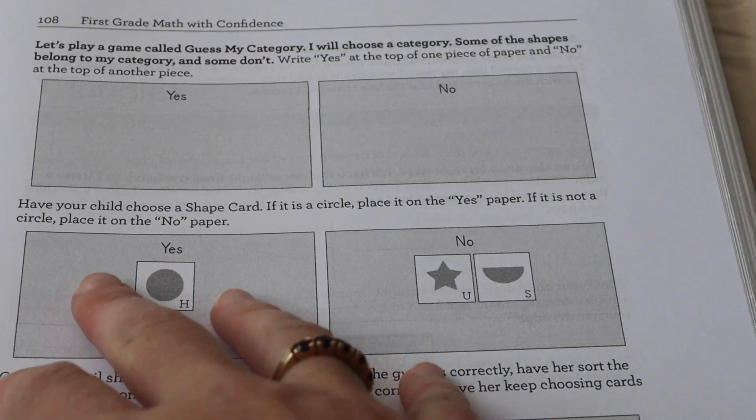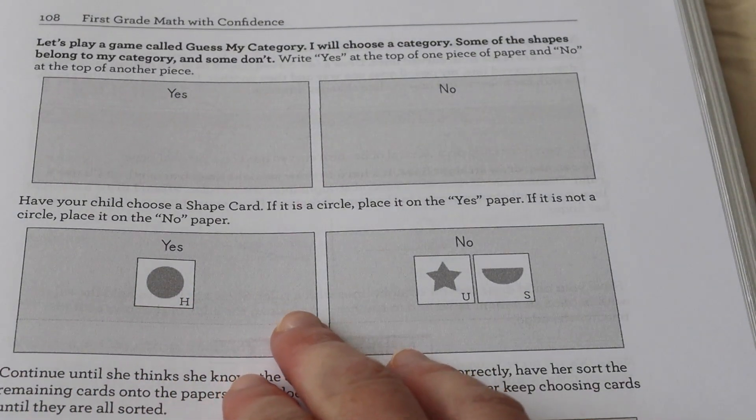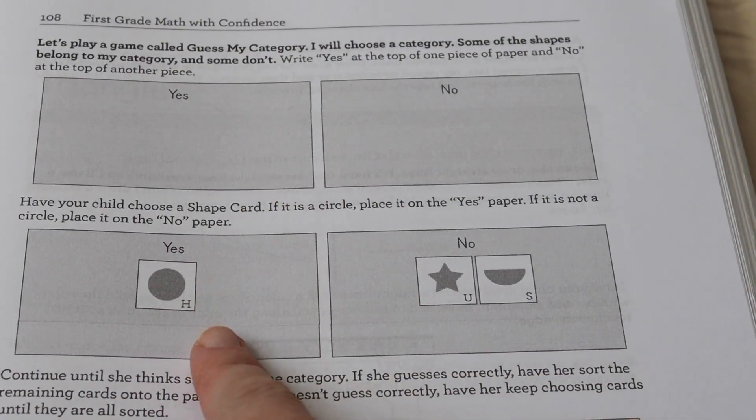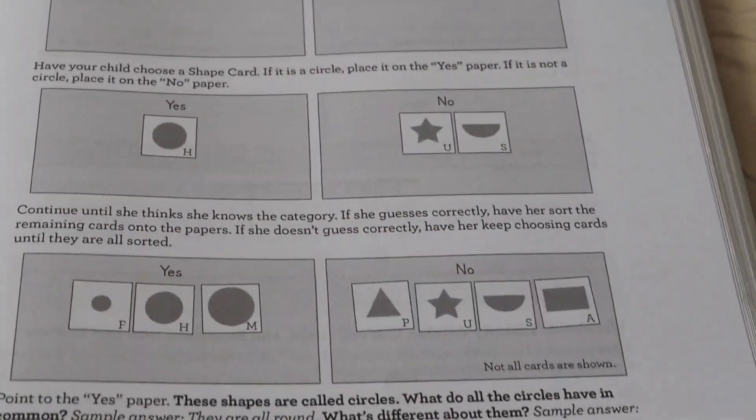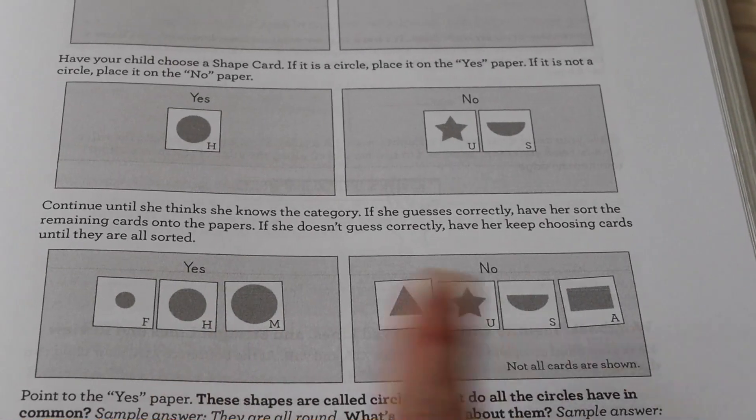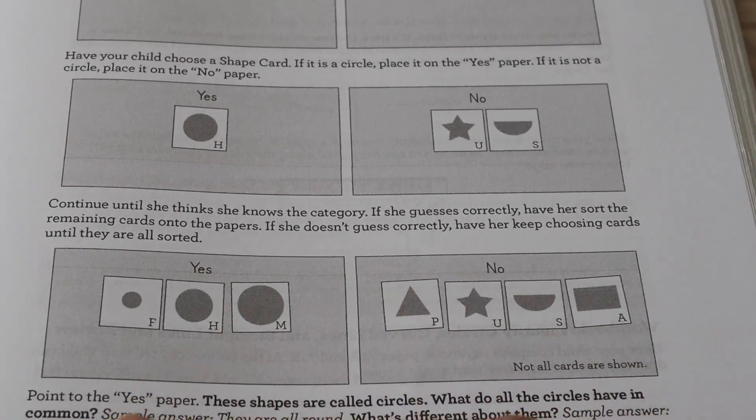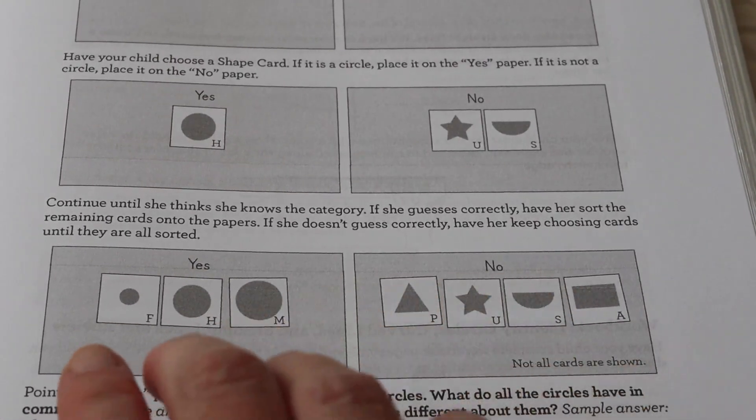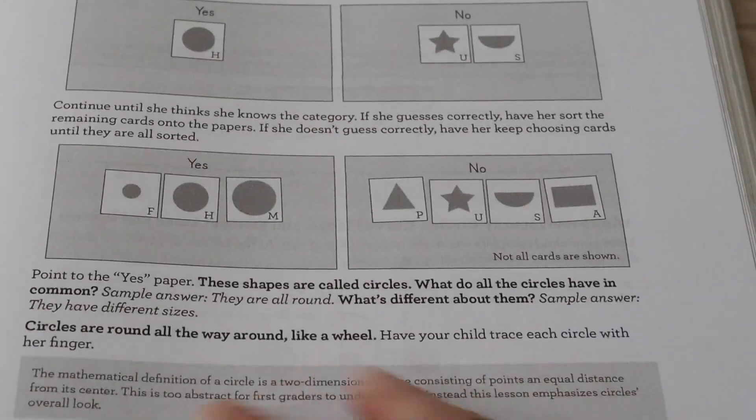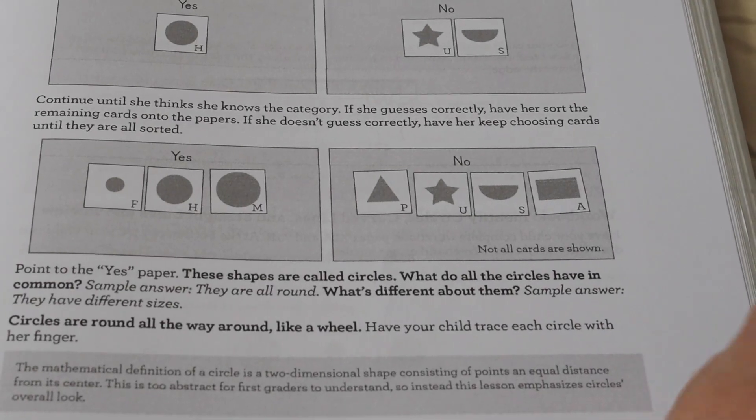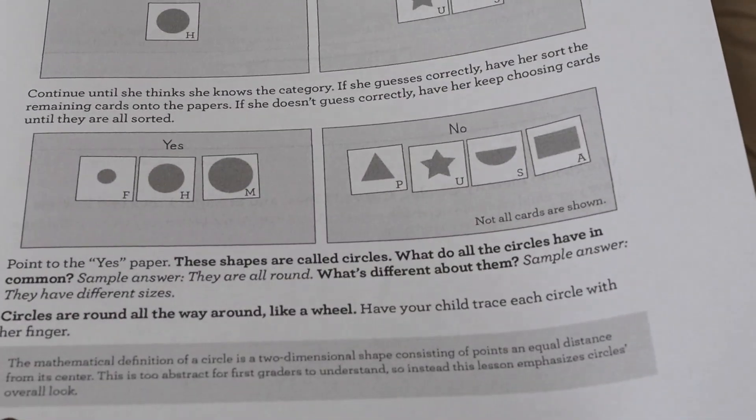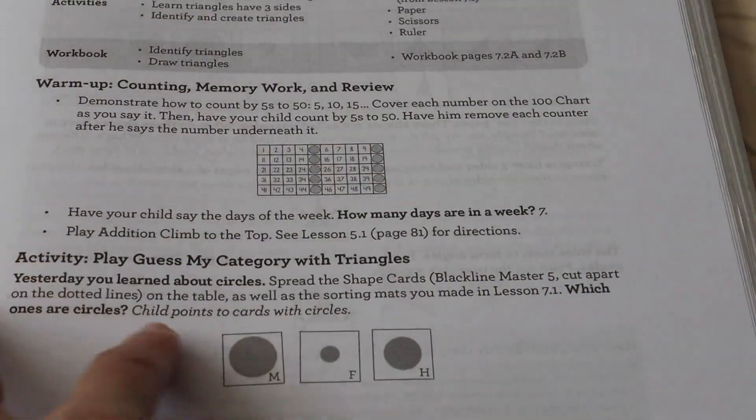And then it tells you what to do as the parent. You're going to write yes and no. And then they're going to choose a shape card. If it's a circle, place it on the yes paper. If it's not a circle, place it on the no paper. So this is, you're doing this as the parent. And then you're going to do it until they think that they know the category. And they're going to keep, your child's going to be the one who decides where things go. So it's just so much fun because it's like a game. Most of the lessons and my kids have just really, really enjoyed it.